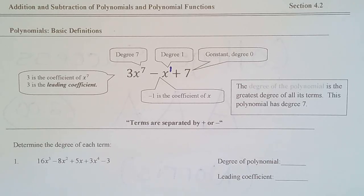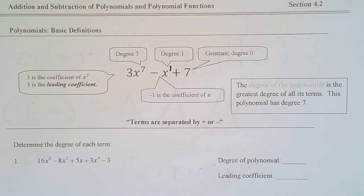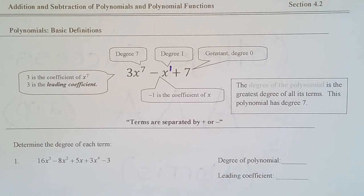We're ready to start section 4.2, which is on page four of your note packet. The good news is 4.2 and 4.3 are really nice, easy sections. So even though chapter four is a very rigorous, important chapter, we do have a couple of easy ones tucked in there. There's a little bit of new vocabulary, but a lot of the stuff you'll already know — like adding and subtracting where you can only add or subtract like terms.